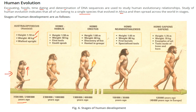Homo habilis: height around 1.59m, weight 50kg. They started using tools and could speak — 23 lakh years ago.